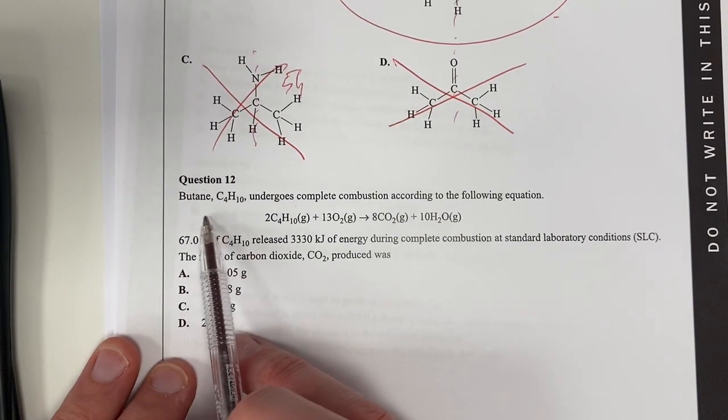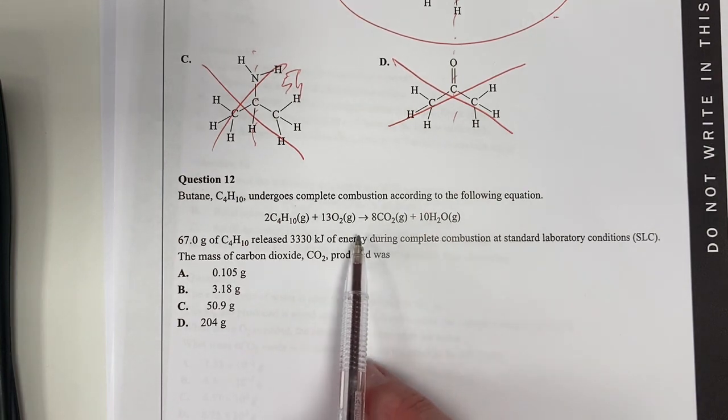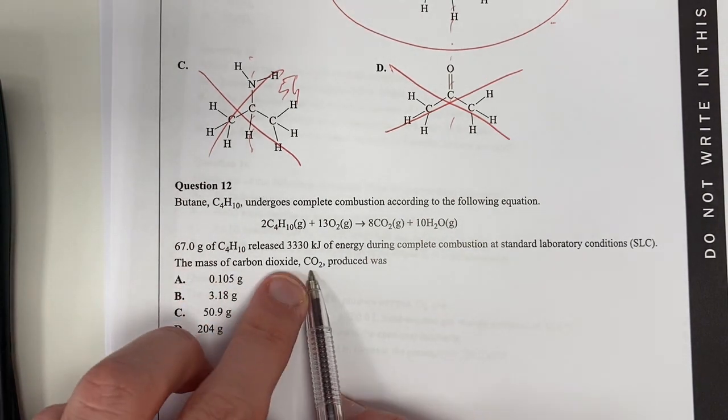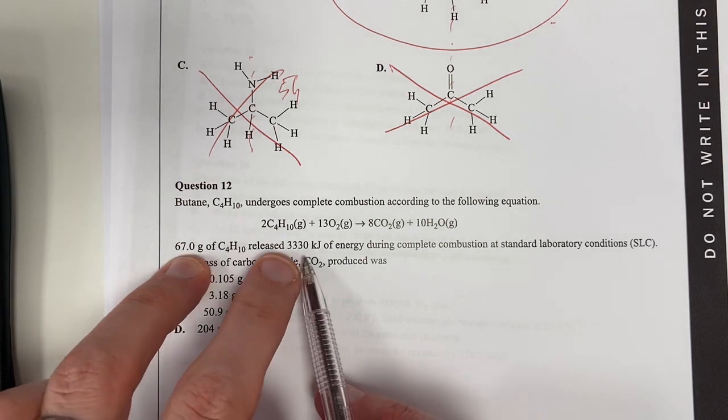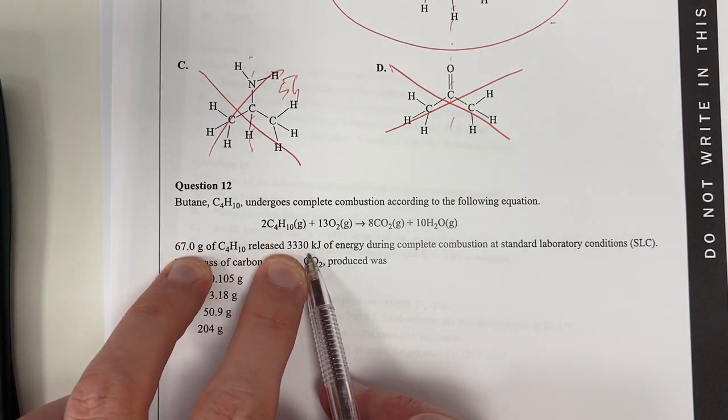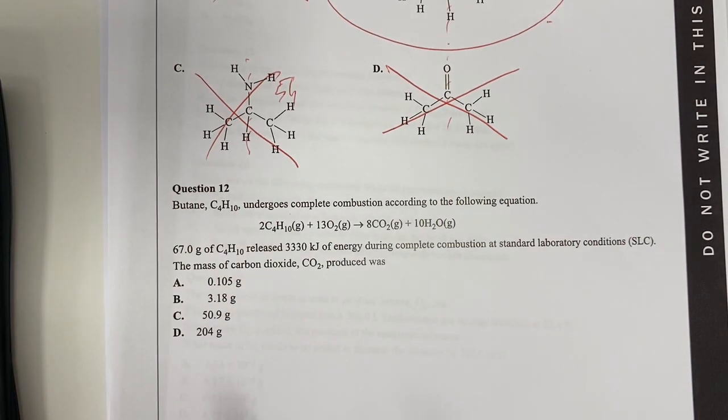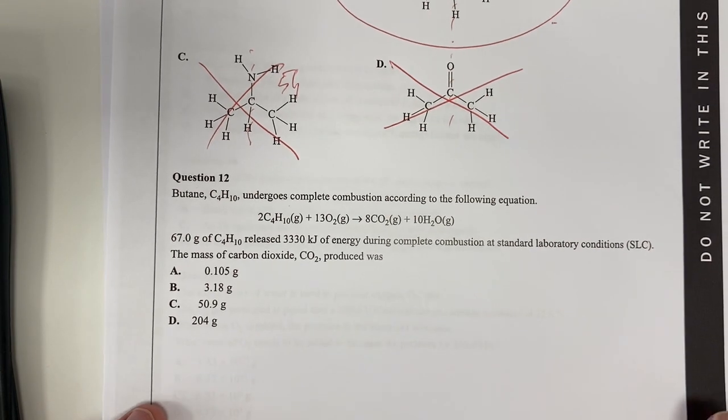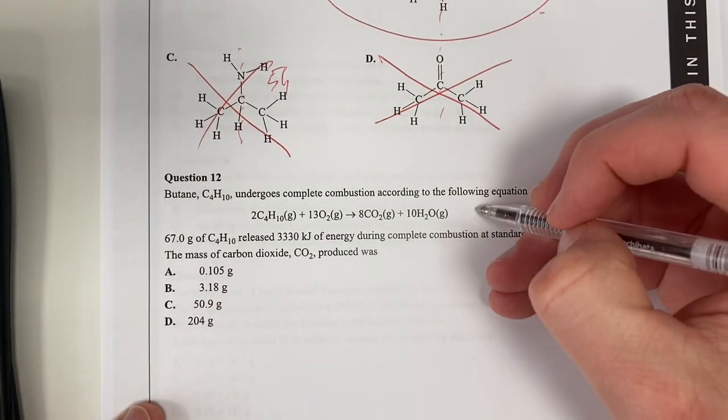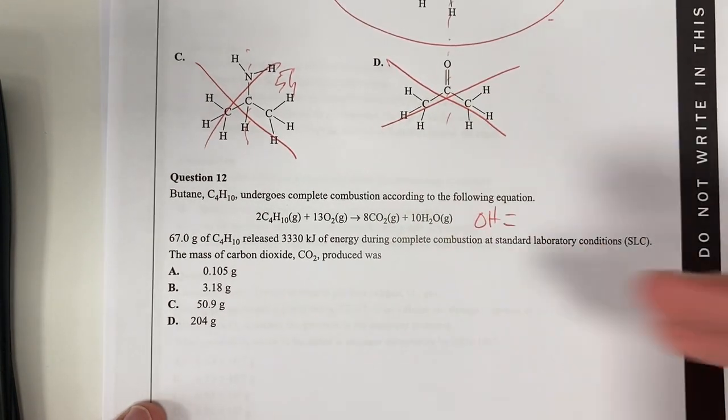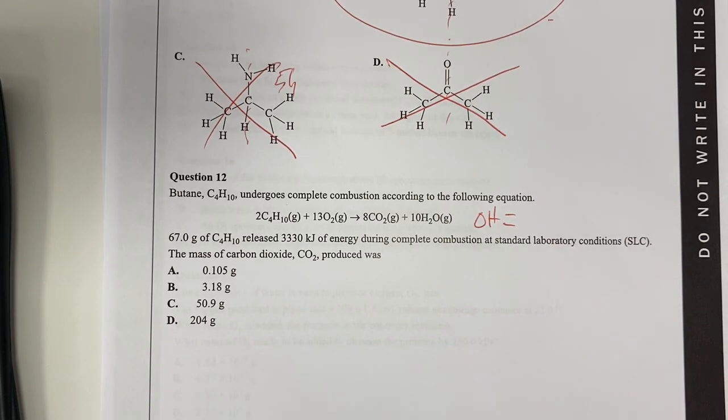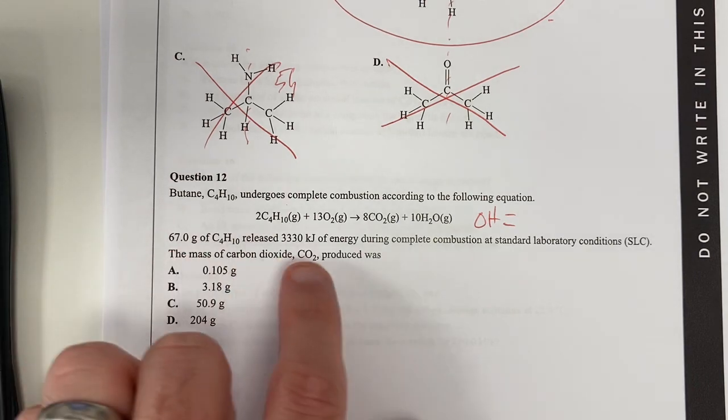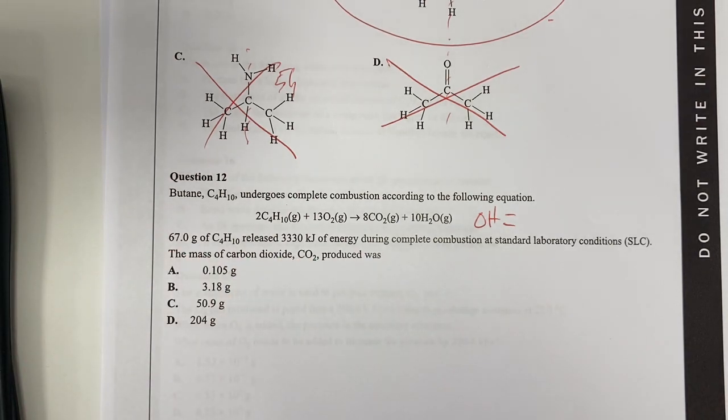Let's move on to question 12. Butane undergoes complete combustion according to this equation. I need to know the mass of carbon dioxide is produced when that releases that much energy. Okay. So, let's have a look. Which one is going to be our limiting reagent, I guess? This is because we've got two things here. Because we've got the delta H as well of this in our data booklet. So I can work out, is it actually, is that all undergoing combustion? Or what is going on here?